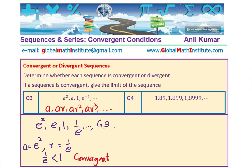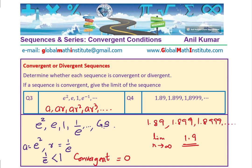Question 4: 1.89, 1.899, 1.8999, and so on. The nines keep accumulating, so the limit of this sequence as the number of terms approaches infinitely large will be 1.9. In the geometric sequence case, it converges to 0 — it is kind of damping, approaching 0.